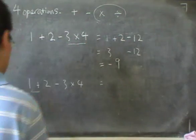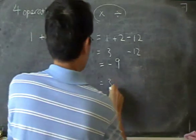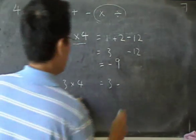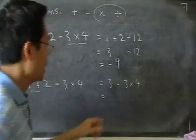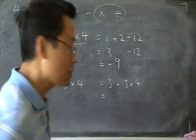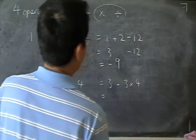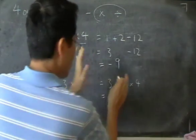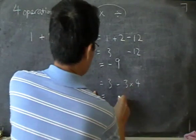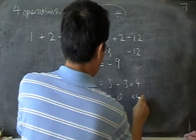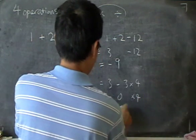So if I start with the 1 + 2, I get a 3, minus 3 × 4. And then I carry on with the 3 minus 3. Again, I don't do the times first, I just do whatever is on the left. 3 - 3 is 0, times 4. And then I do 0 × 4, that's 0.